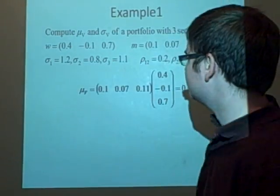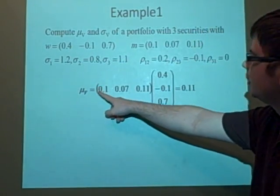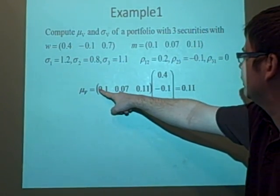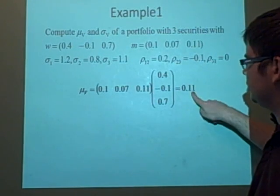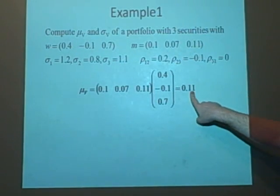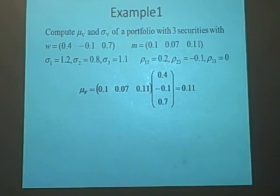So, nice easy one. We're just multiplying the M by W transpose to give a return of 11%, so that was nice and easy.